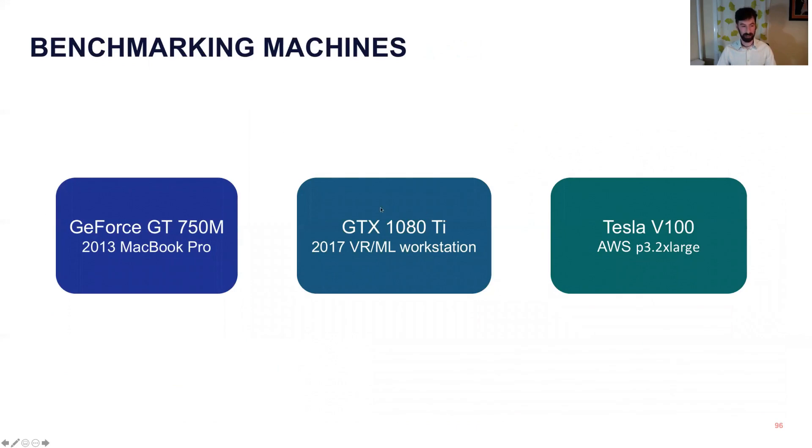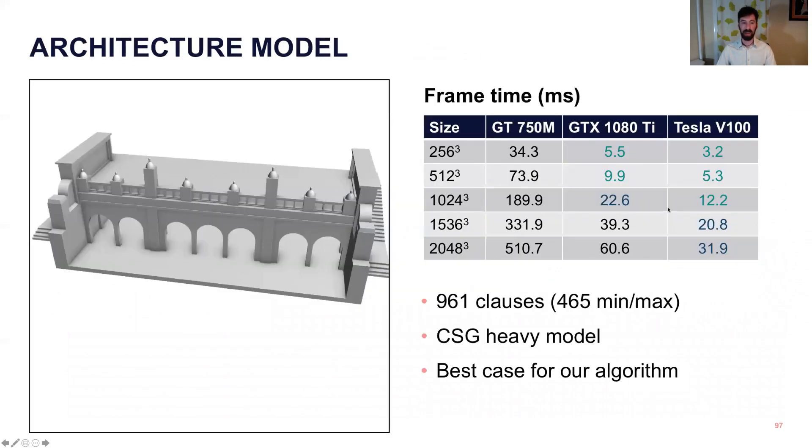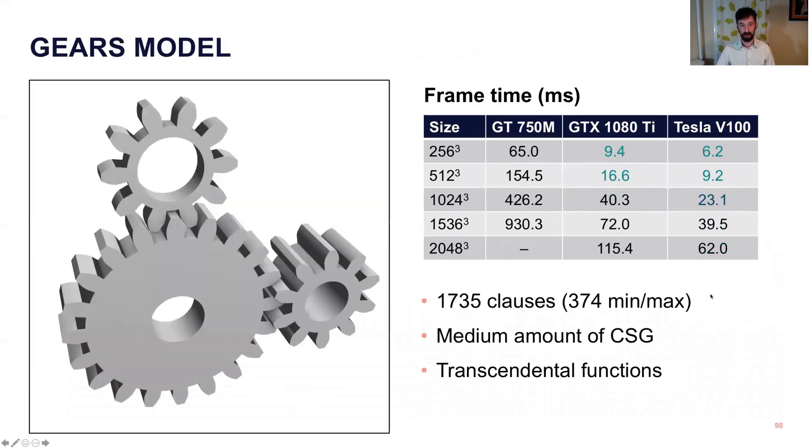We did this benchmarking on the same three machines, and we evaluated three different models. The architecture model is very much a best-case model. It's very CSG heavy, it's about a thousand clauses, and this runs at 30 frames per second on the V100, even at 2048 voxels cubed, which is a relatively big voxel image. On older laptops it performs obviously much worse, so you need a modern GPU for this technique to work. We also revisit the gears model here, and so this is the 2D gears extruded and rotated a little bit, and this is a bit slower, where it's running at 30 frames per second at 1024 cubed, and then slower at higher resolutions.